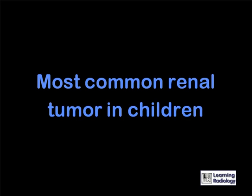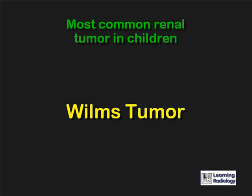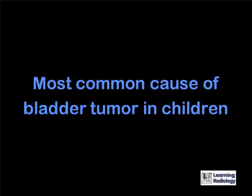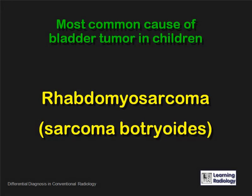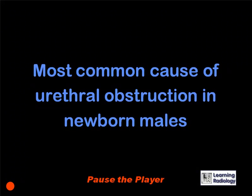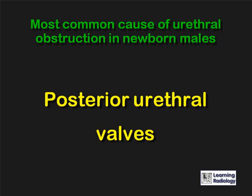What is the most common renal tumor in children? A Wilms tumor. What is the most common cause of a bladder tumor in children? A rhabdomyosarcoma, sarcoma botryoides. And lastly, what is the most common cause of urethral obstruction in newborn males? Posterior urethral valve.